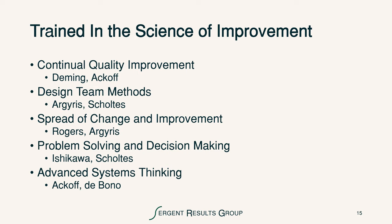Guiding council members also need to be trained in the science of improvement. They need to know how they know. This comes from learning continual quality improvement methods from people like Deming and Ackoff. They need to understand that design team methods are quite different from the usual team, committee, or task force — those methods are no longer appropriate for a modern business. Design team methods can be learned from the work of Peter Scholtes, Chris Argyris, and spread methods from Everett Rogers. Spreading change and improvement is a critical part of design team work.